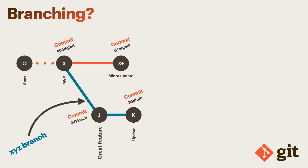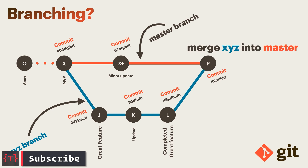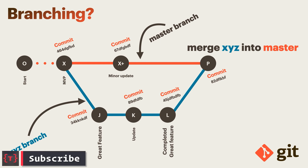Now suppose a minor bug comes into your app. You simply switch to the master branch, make the minor update, commit it, and push it to the store. Then you switch back to your XYZ branch because these two branches are separate. Finally, when feature J is complete at commit L, we switch to the master branch and merge the XYZ branch into it — this is called merging of branches. We can also have nested branches; from XYZ we can create another branch called ABC or whatever you wish.